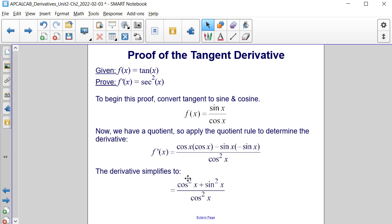And the derivative then simplifies to cosine squared x plus sine squared of x, all divided by cosine squared x.